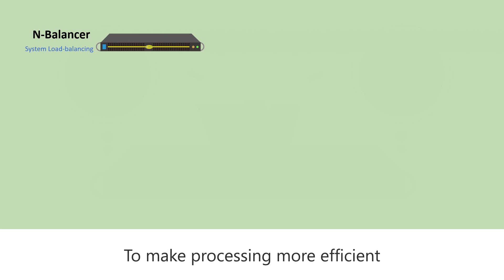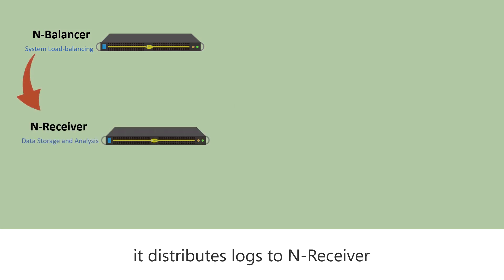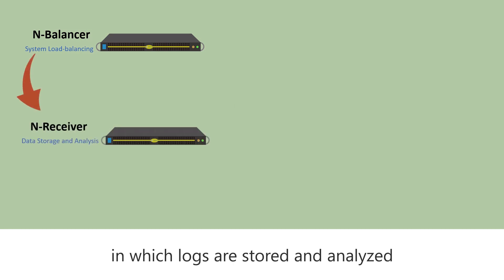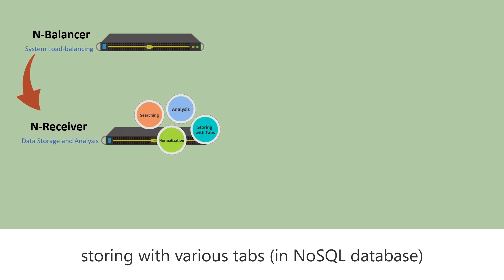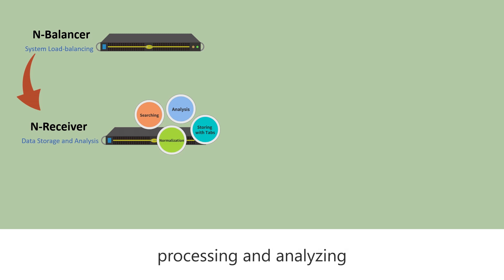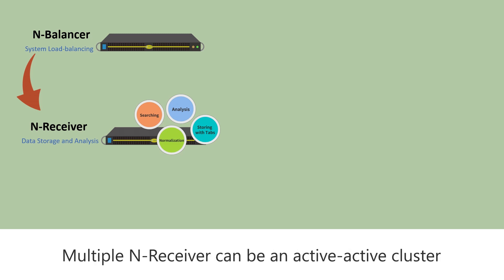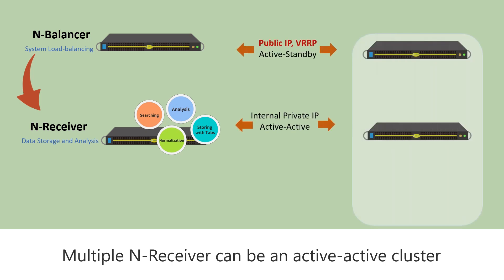To make processing more efficient, it distributes logs to nReceiver, in which logs are stored and analyzed. The most important tasks of nReceiver include normalizing logs, storing with various tabs, processing and analyzing, and searching with set criteria.